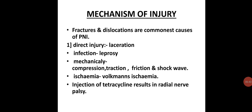Mechanism of injury: fractures and dislocations are the commonest cause of peripheral nerve injuries. Some mechanisms by which a nerve may be damaged are: direct injury such as cut or laceration; infection such as leprosy; mechanical causes including compression, traction, friction, and shock waves; ischemia such as Volkmann's ischemia; and injections of neurotoxic drugs such as tetracycline, which can result in radial nerve palsy.